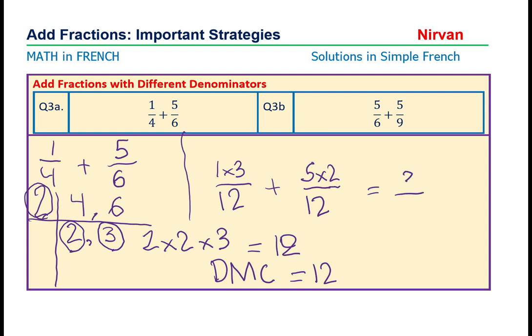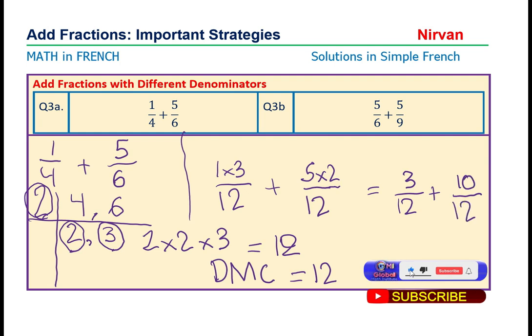Un fois trois, trois. Et le dénominateur est douze. Plus cinq fois deux, dix. Dénominateur, douze. Dix plus trois est treize. Et le dénominateur reste la même.